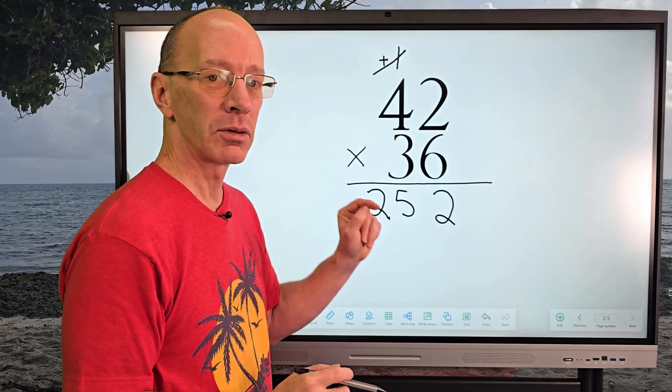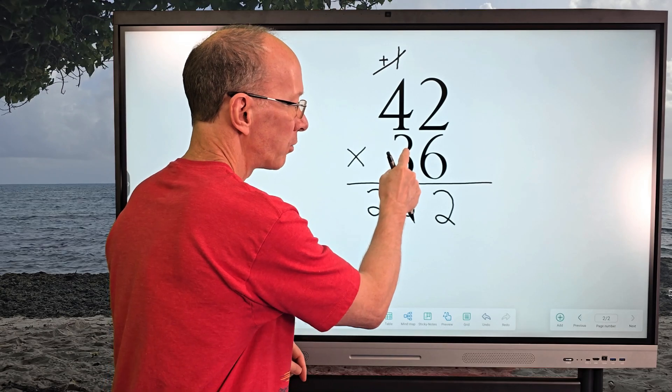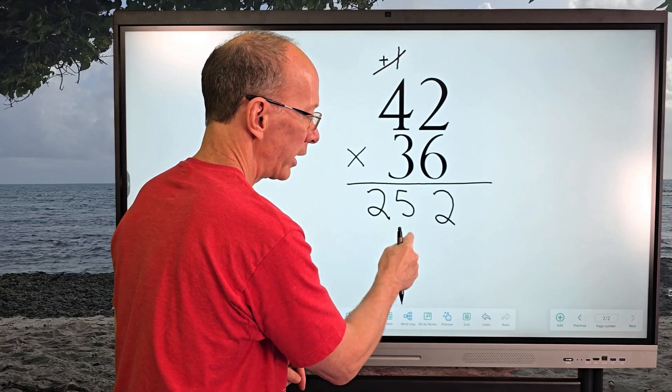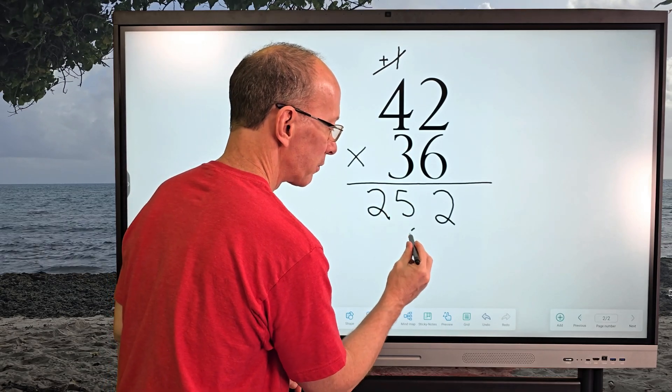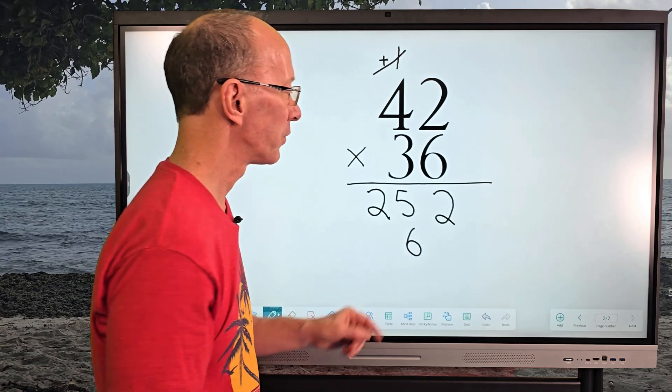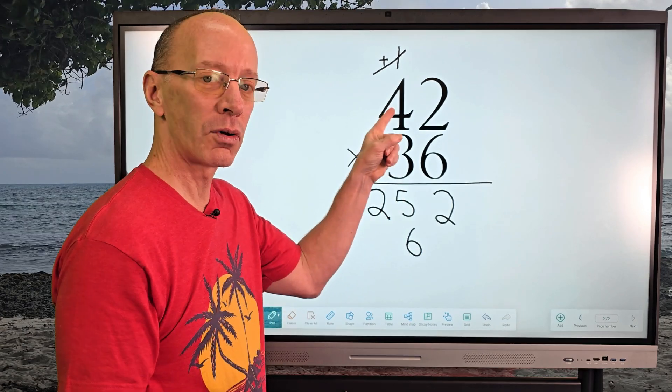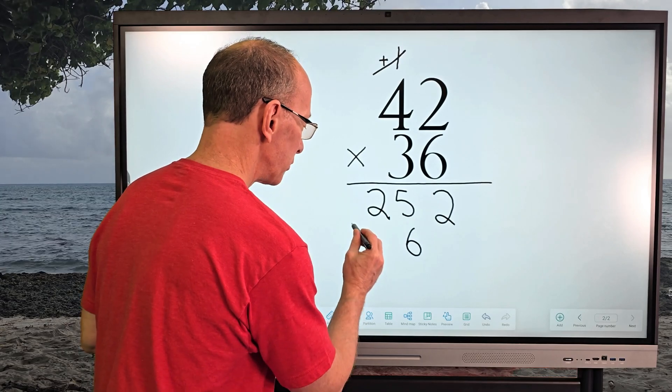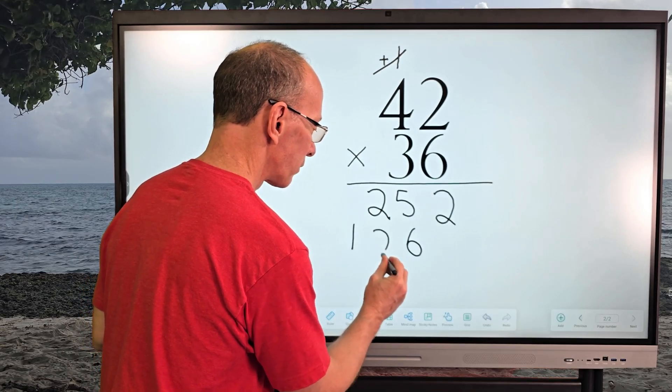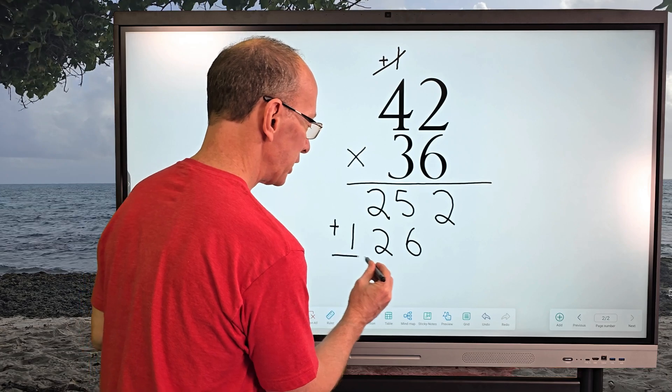So three times two equals six. Now, do you see that three? We need to put that six right below there, right here. We're going to put that right here. So now I can take three times four equals 12. And I can just write 12 right here. And now I am ready for addition.